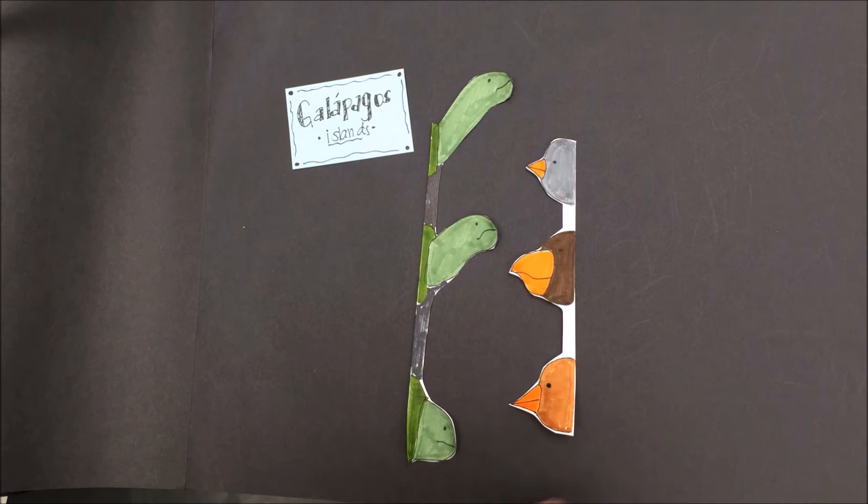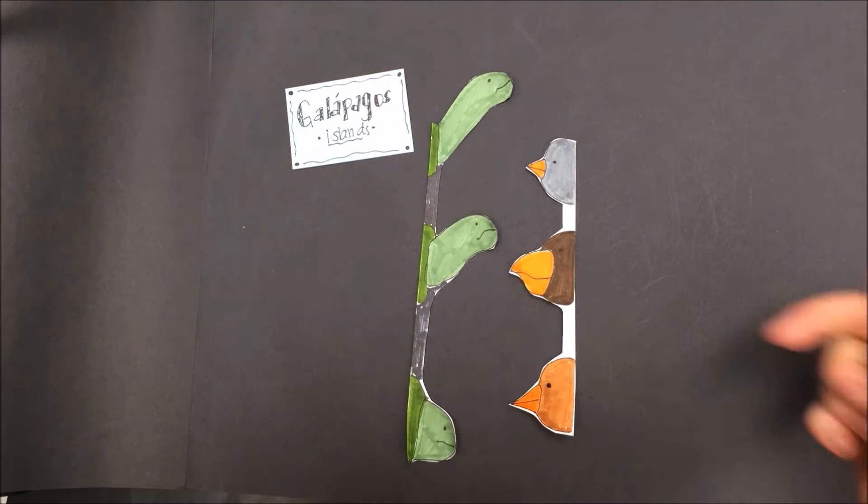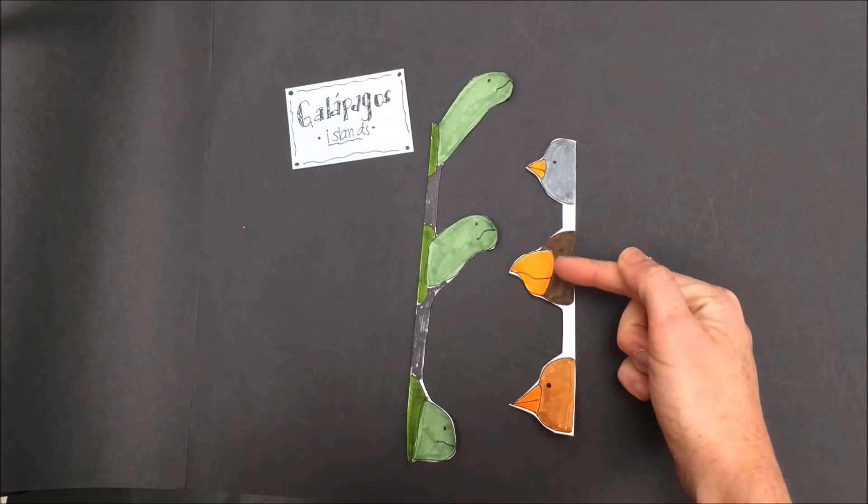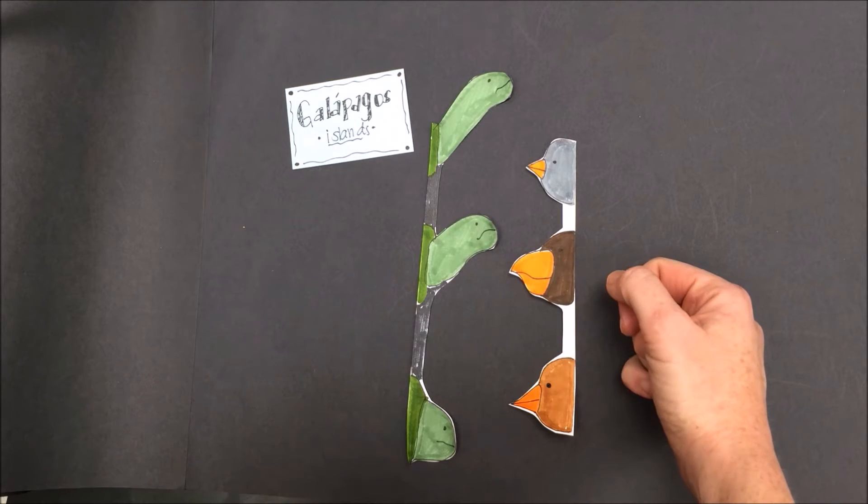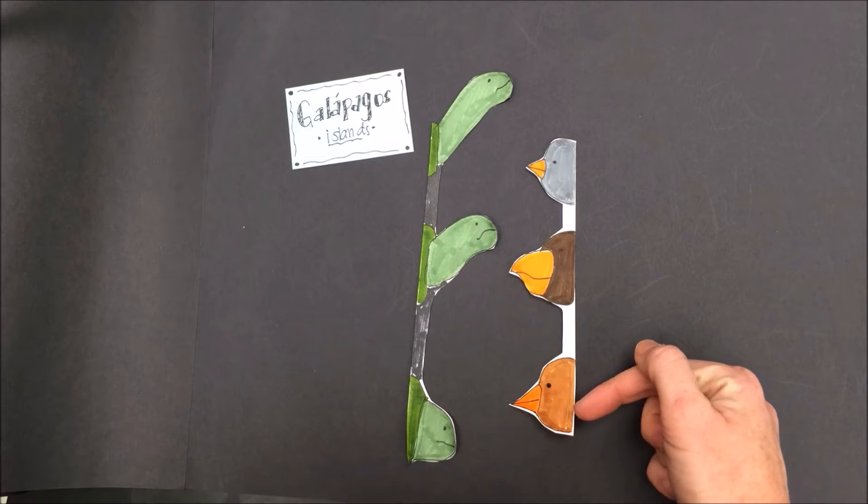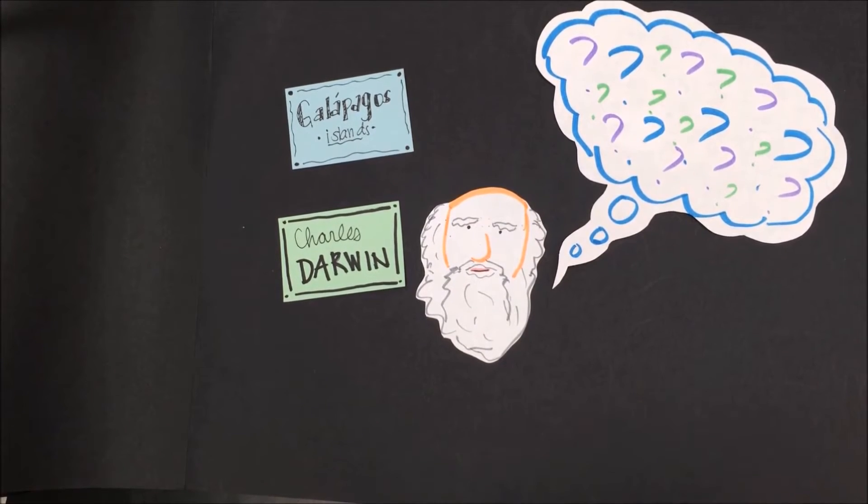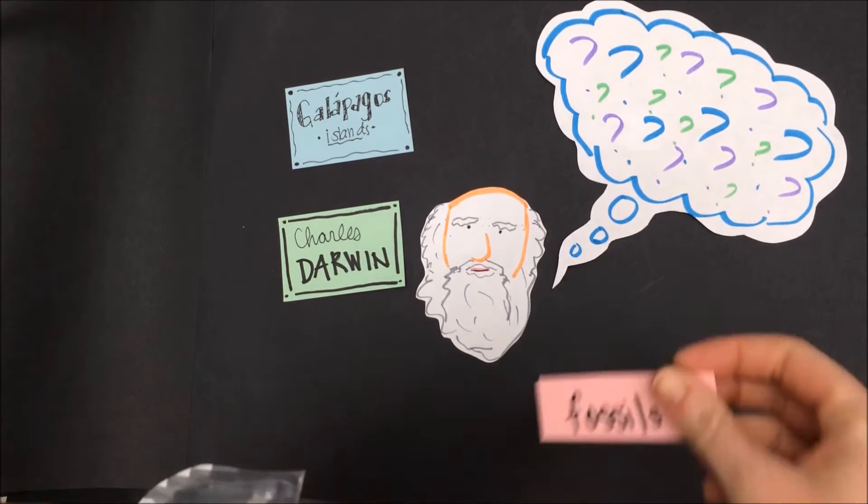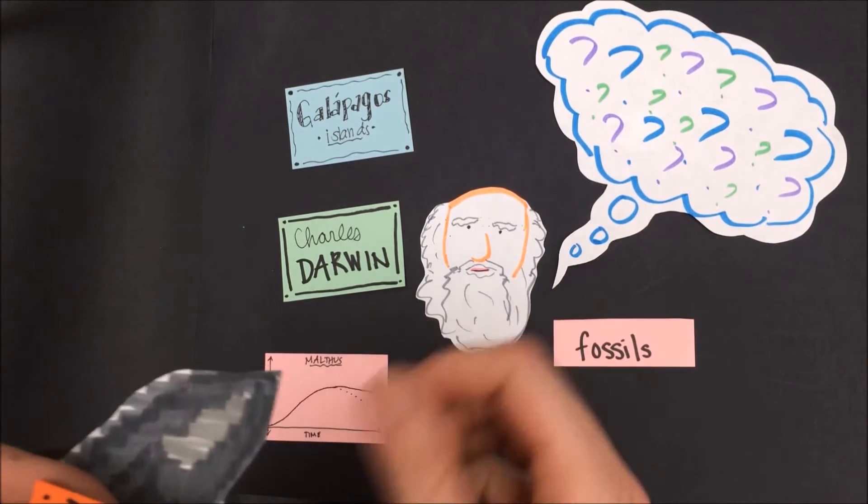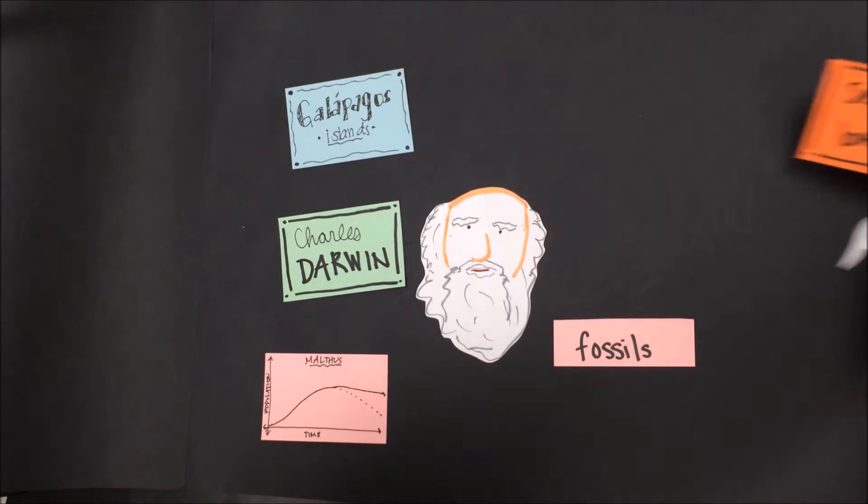Darwin also noticed that all of the different finches had different beak shapes, almost as if they were perfectly suited to the kinds of foods that they ate. Finches that ate primarily seeds and nuts had larger beaks that were better for crushing. Those with sharper beaks tended to eat insects. Darwin pondered what he observed on the Galapagos Islands and added it to what he already knew about fossils and economics as well as selective breeding.